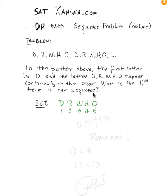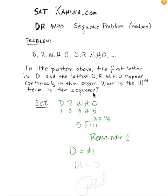To find out the 111th term, divide 111 by 5. And 111 divided by 5 is 22 and 1 fifth, or 22.2 — it's 22 with a remainder of 1. The SAT uses remainders. Whatever remainder you find is the element's number in the set. Remainder 1 is the letter D, since D equals number 1. So the 111th term is D.